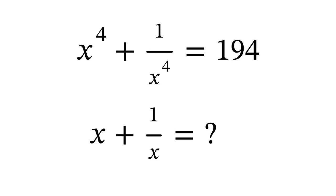Welcome to this Olympiad question that says: find the values of x plus 1 all over x, given that x to the power of 4 plus 1 all over x to the power of 4 is equal to 194.